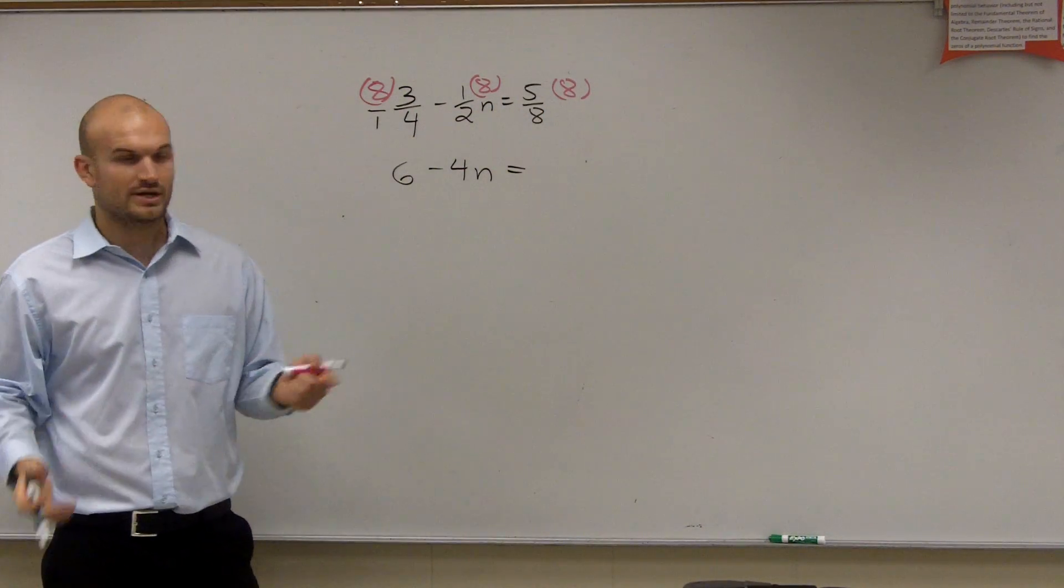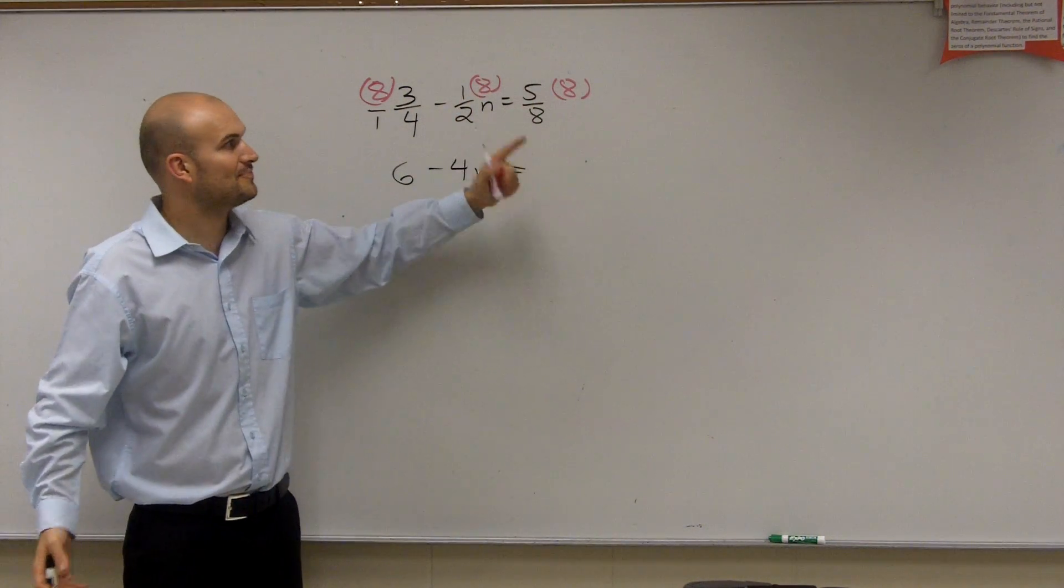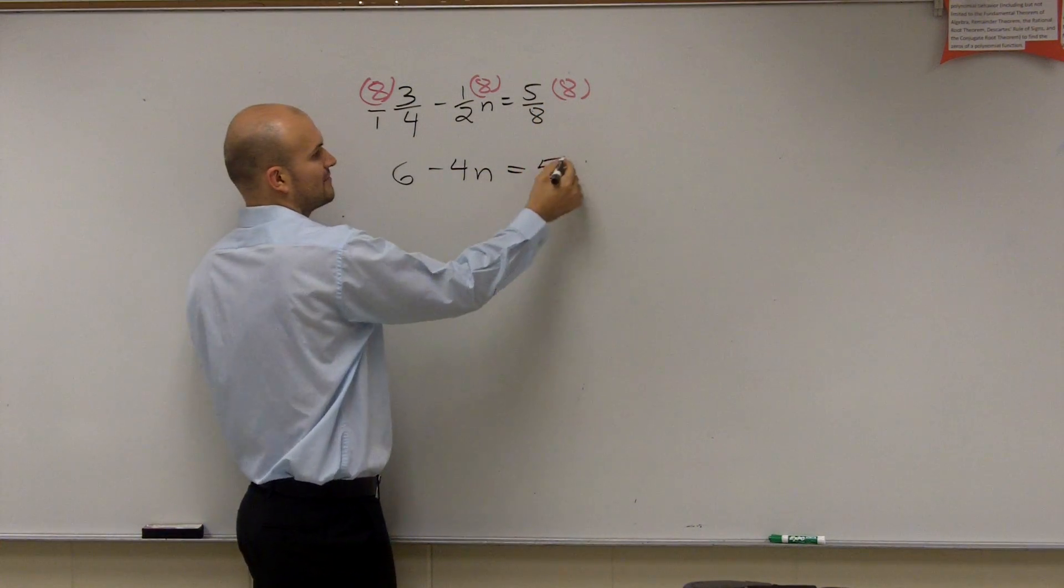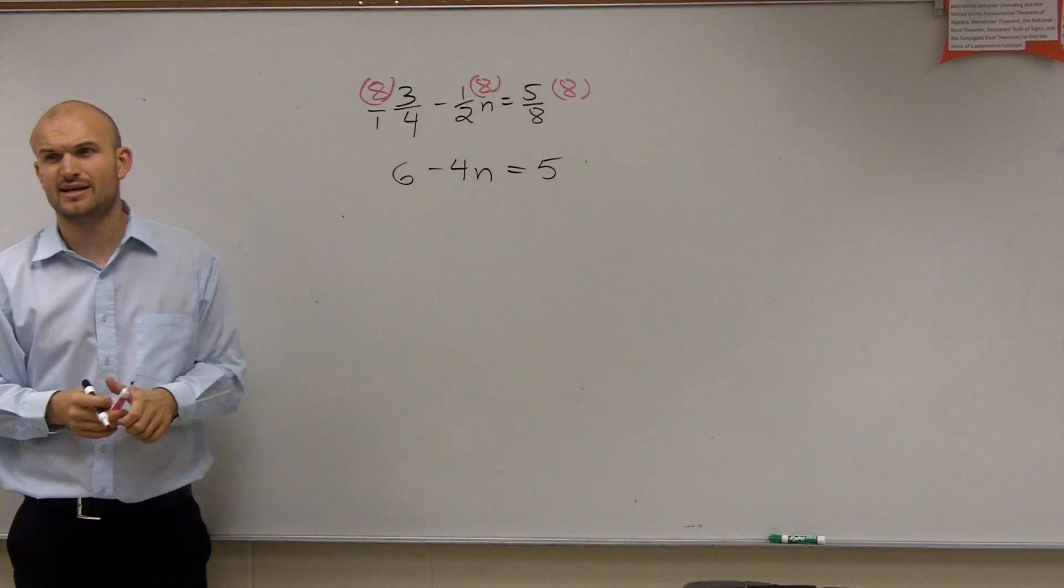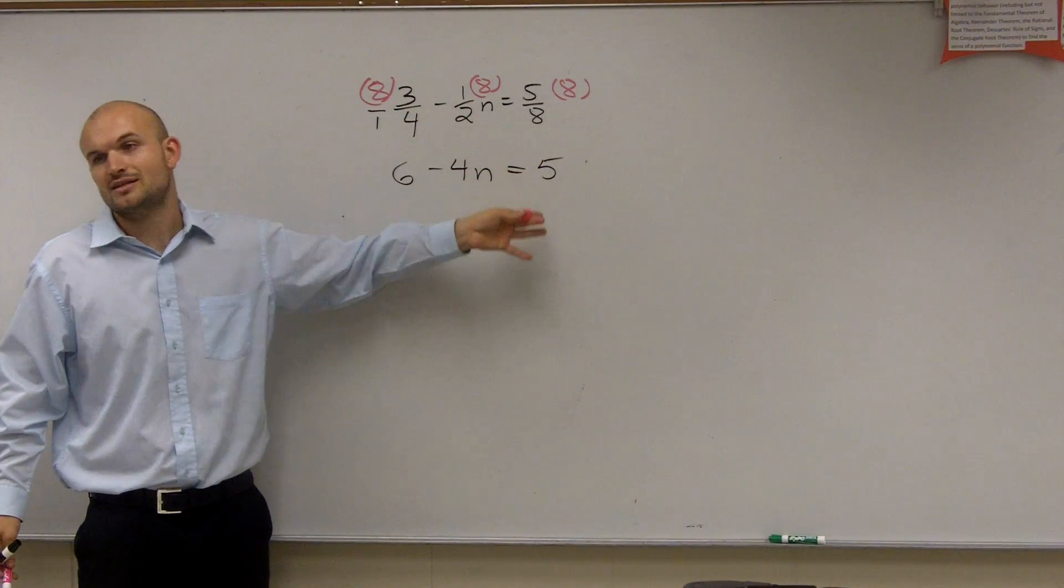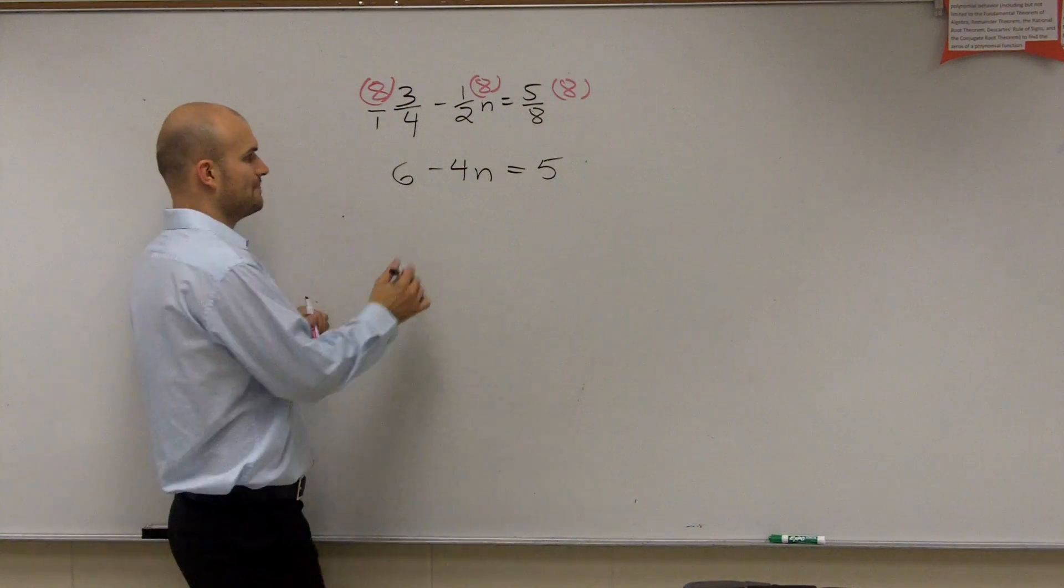So minus 4n equals the 8 you can see. 5 times 8 is going to be 40. Divide by 8 is 5. Or you guys just noticed, oh, those equal 1, which equals 5. See how that gets rid of fractions? Yes, you can do this the old school way and subtract the fractions, but it's OK. We can just get rid of them like that.